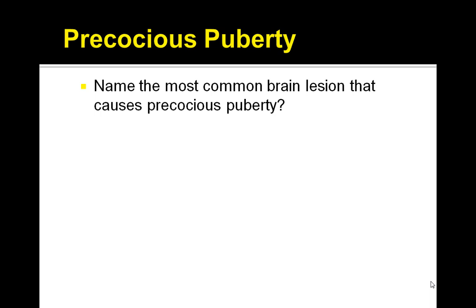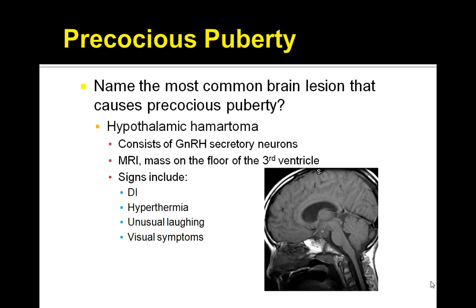What is the most common brain lesion that causes precocious puberty? The answer is hypothalamic hamartoma. This consists of GnRH secretory neurons. On MRI, you will see a mass on the floor of the third ventricle. Signs include diabetes insipidus, hyperthermia, unusual laughing, and visual symptoms.